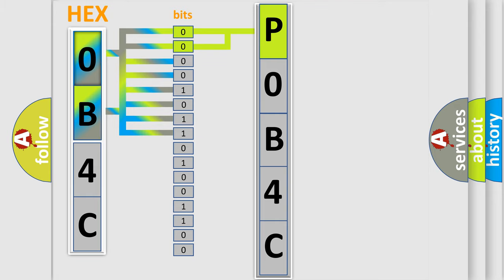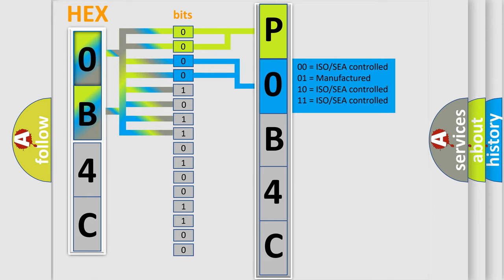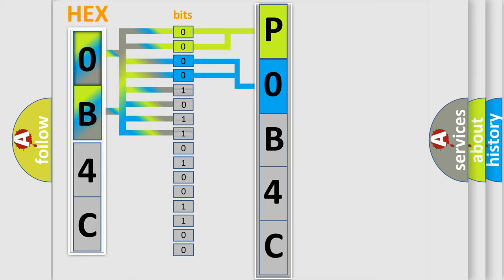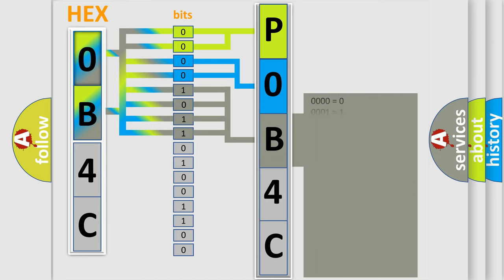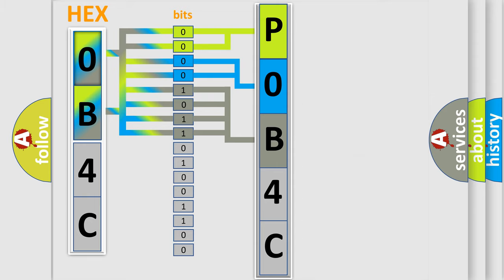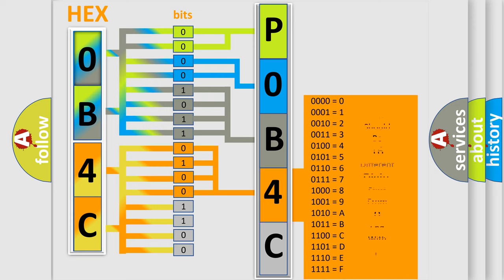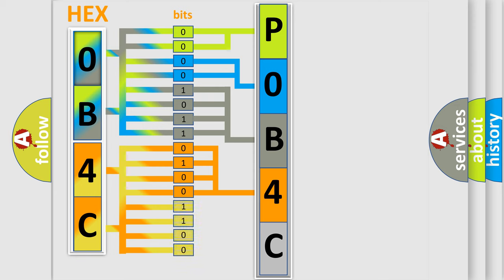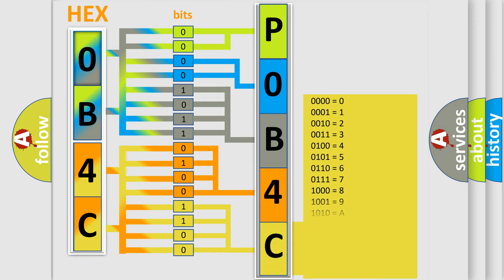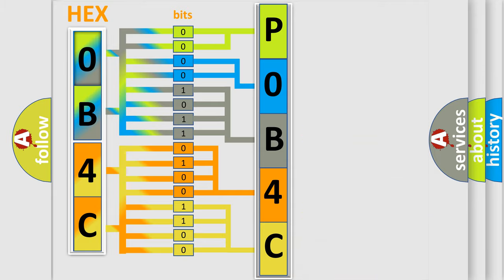The next two bits determine the second character. The last bits of the first byte define the third character of the code. The second byte is composed of a combination of eight bits. The first four bits determine the fourth character of the code, and the combination of the last four bits defines the fifth character. A single byte conceals 256 possible combinations.